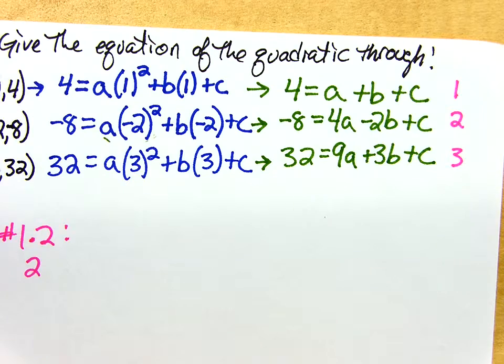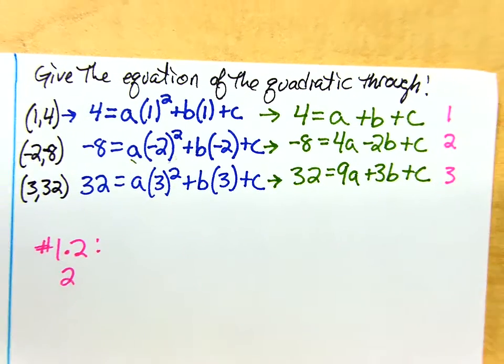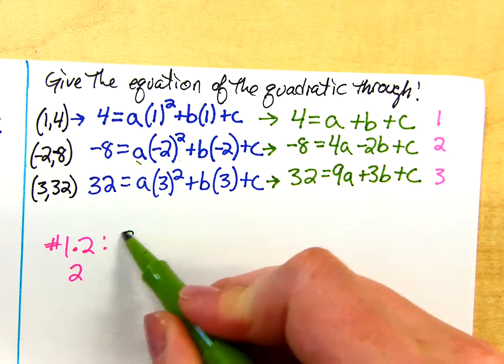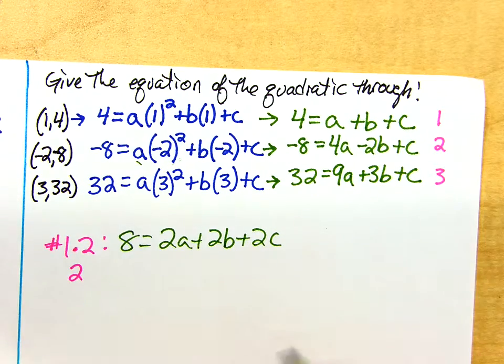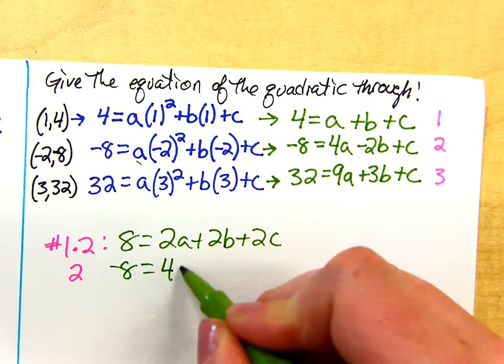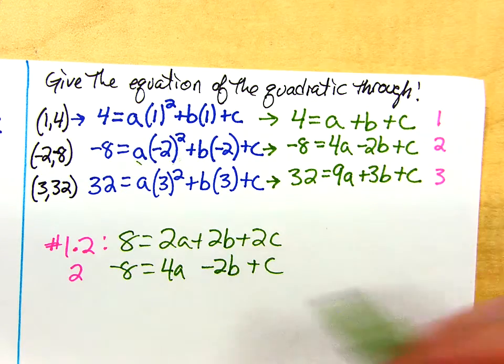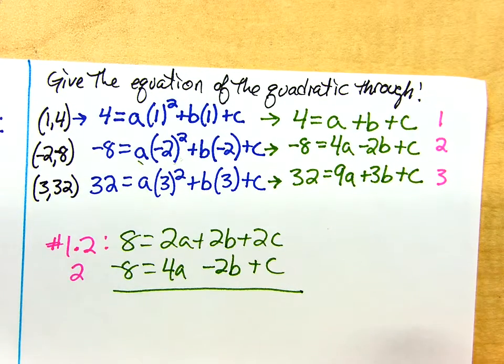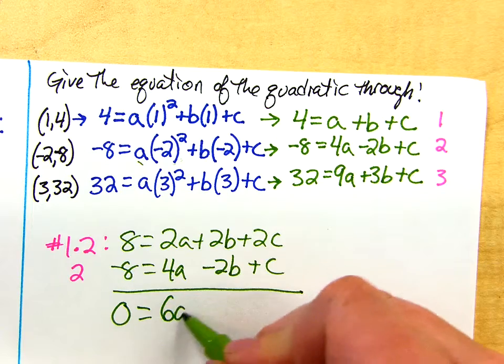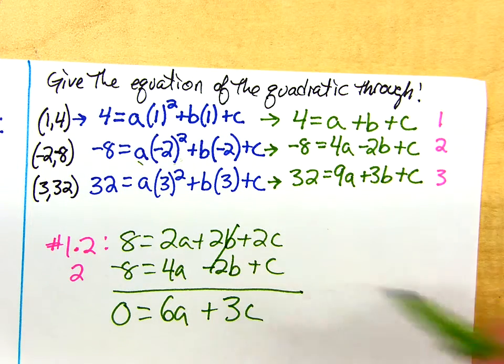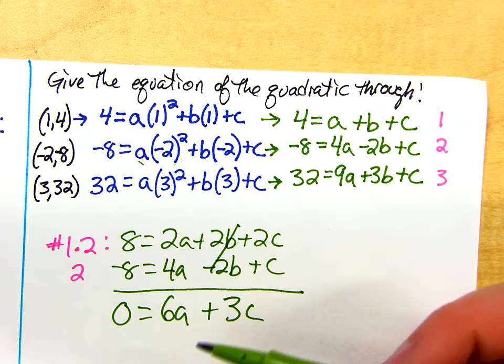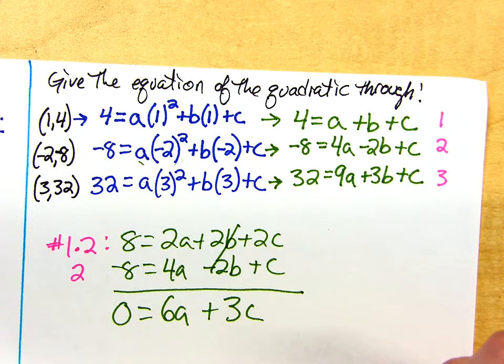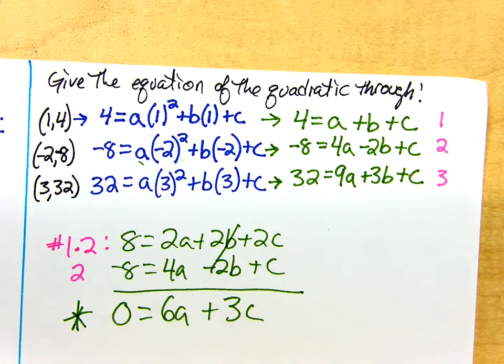Equation number 1 times 2 would get me 8 equals 2a plus 2b plus 2c and we'll join that with equation 2 as it is. Negative 8, 4a minus 2b plus c. So remember we added these together. I get a 0, 6a, the b's are gone, plus 3c. Don't get nervous that you got a 0 over here. So what? 0 is a number like anybody else.